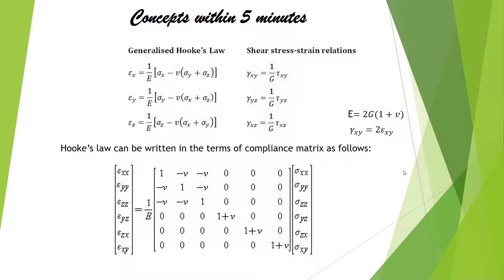Epsilon xx equals 1 by E into sigma xx minus mu into sigma yy minus mu into sigma zz. All these equations are actually put in the matrix form in order to get this compliance matrix.